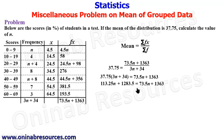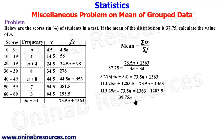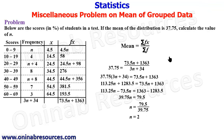Collecting like terms: 113.25n − 73.5n = 1363 − 1283.5, which gives 39.75n = 79.5. Dividing both sides by 39.75, we get n = 79.5 / 39.75 = 2. So the value of n is 2. That's the solution to this problem. Thank you for watching — I hope you enjoyed it. Please like and share this video. Goodbye!